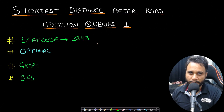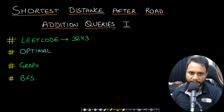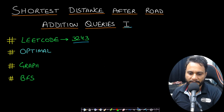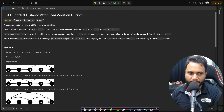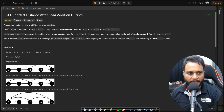Hello guys, welcome back to TechDose. In this video we will look at the 'Shortest Distance After Road Addition Queries' problem, which is LeetCode number 3243. Let's now look at the problem statement.